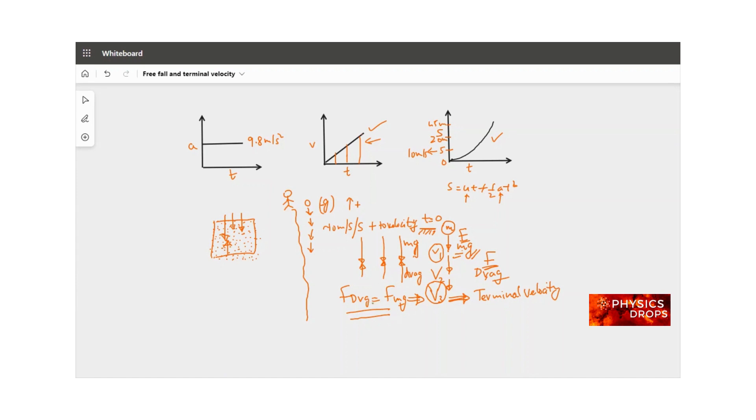Why does it stop? Does acceleration due to gravity stop acting on the object? No, there is still g pulling it, acting on it downward. Why does it not increase velocity further?